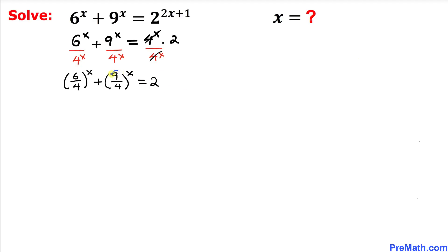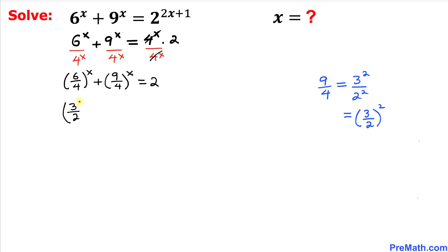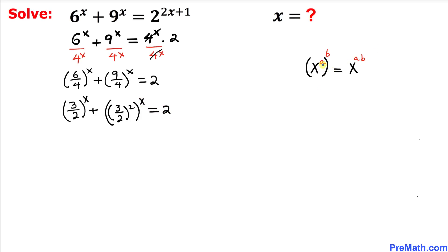Let's focus on simplifying these fractions. The term 9/4 can be written as 3² divided by 2², which means (9/4)^x equals (3/2)^(2x). And 6/4 reduces to 3/2, so (6/4)^x equals (3/2)^x. Our equation now reads (3/2)^x plus (9/4)^x equals 2.